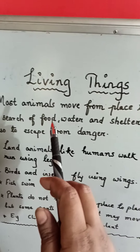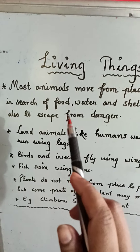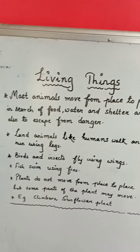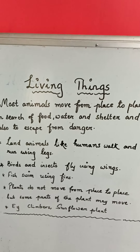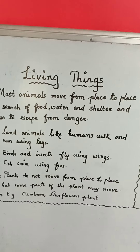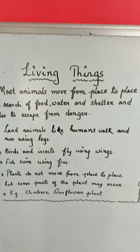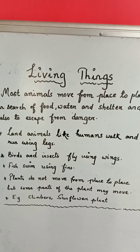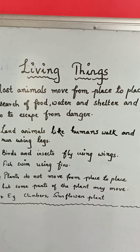Most animals move from place to place in search of food, water and shelter. Animals are living things and living things mostly move from place to place. They move to get food, water and shelter because they don't have a permanent shelter or permanent food.